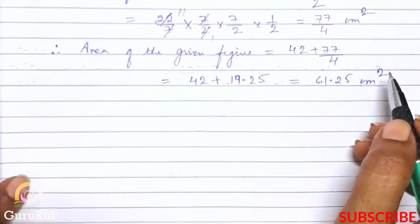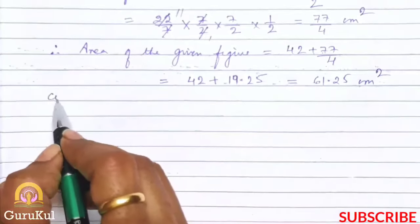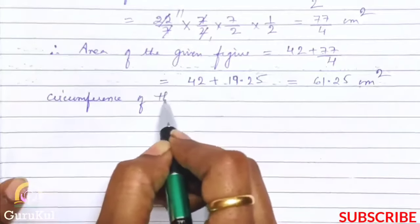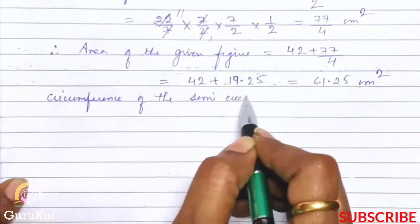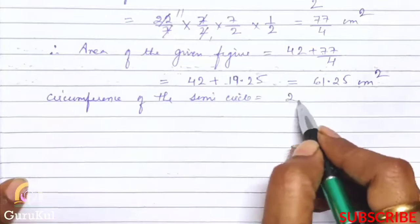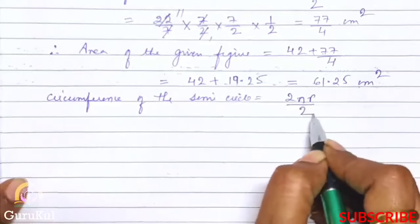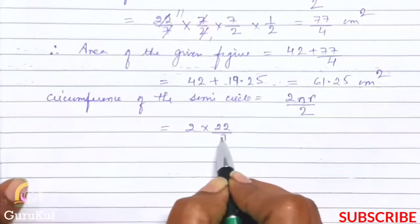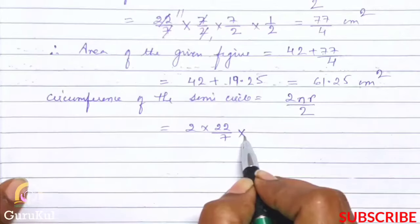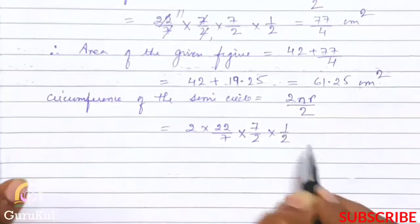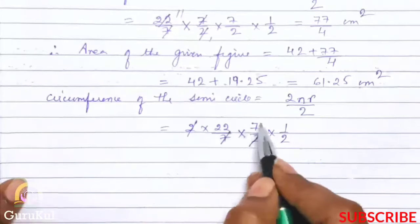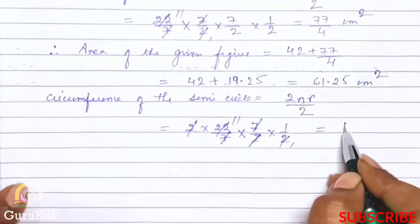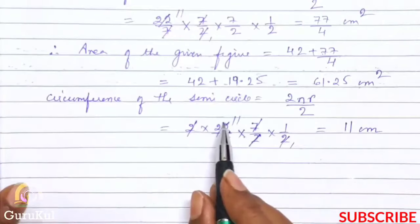Now we need to find the circumference. Circumference of the semicircle is equal to 2 pi r divided by 2, because it is a semicircle. So 2 into 22 by 7 into r, radius was 7 by 2 into half. 2 and 2, 7 and 7 got cancelled, giving circumference 11 cm of the semicircle.